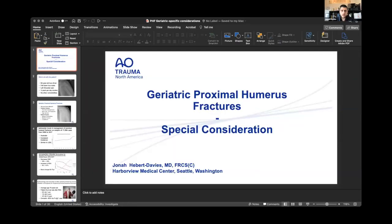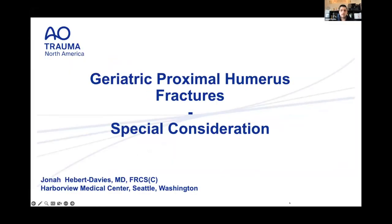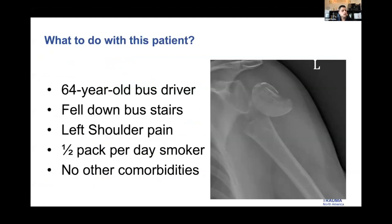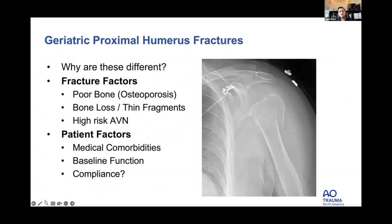Now geriatric specifics and special considerations. The question is: what do we do with this patient — a 64-year-old bus driver who fell down the stairs, left shoulder pain, half-pack-per-day smoker, no other major comorbidities, fairly active? The big reasons geriatric proximal humerus fractures are different relate to two main things: fracture characteristics and patient factors.